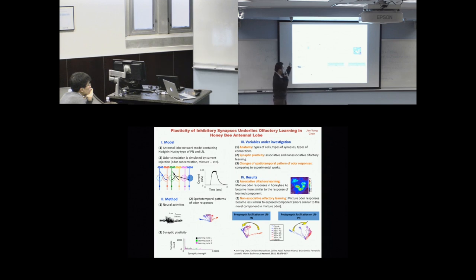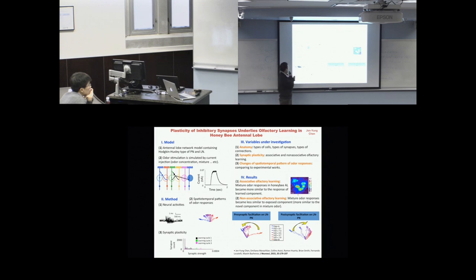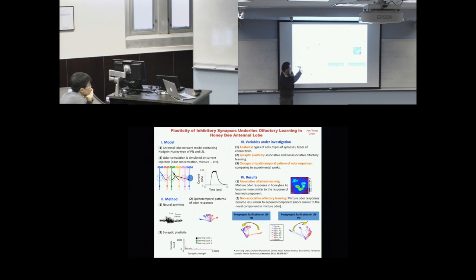Based on this method, the model can produce neural activity — we can trace the membrane potential of each neuron in the network. Using principal component analysis, I can map the whole population of projection neuron activity into a space to check their change of spatial-temporal pattern across the population. The traces here show examples — each trace is one odor, so there are about seven different odors shown, including single odors and mixtures.